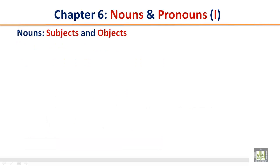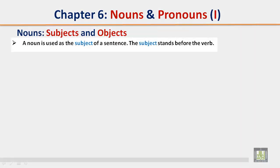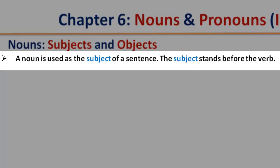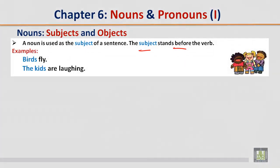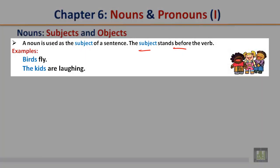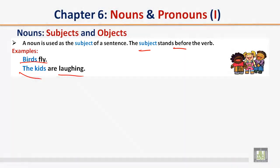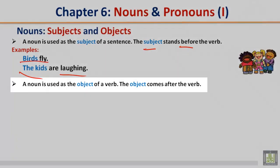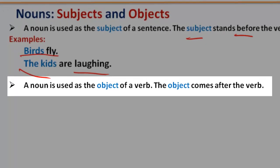Nouns: Subjects and Objects. A noun is used as the subject of a sentence. The subject stands before the verb. For example: Birds fly. The kids are laughing — 'the kids' is the subject and 'laughing' is the verb. A noun is also used as the object of a verb; the object comes after the verb.